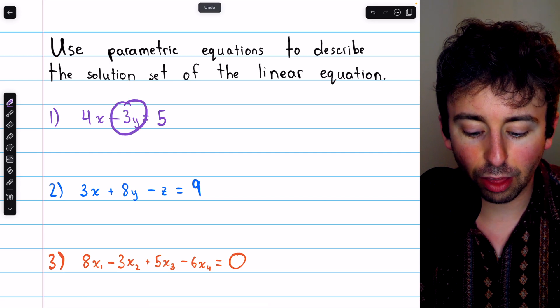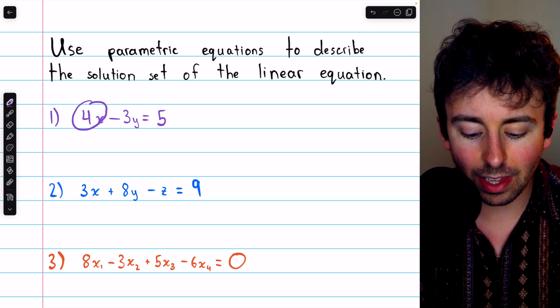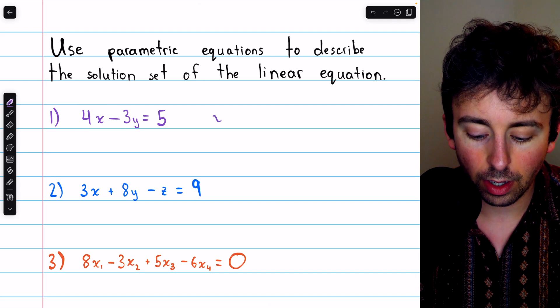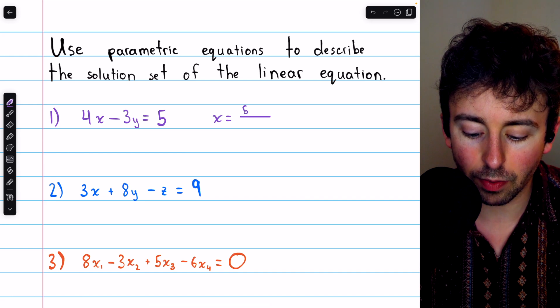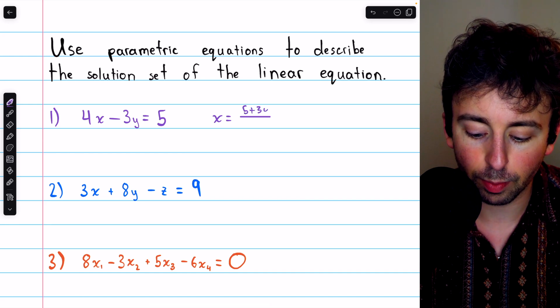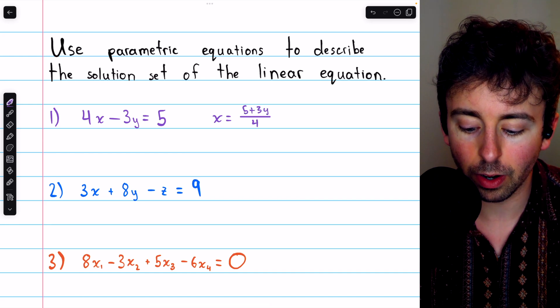To do that, we'll add 3y to both sides, and then divide everything by 4. So we have x equals 5 plus 3y, and then we divide everything by 4. So 5 plus 3y divided by 4.